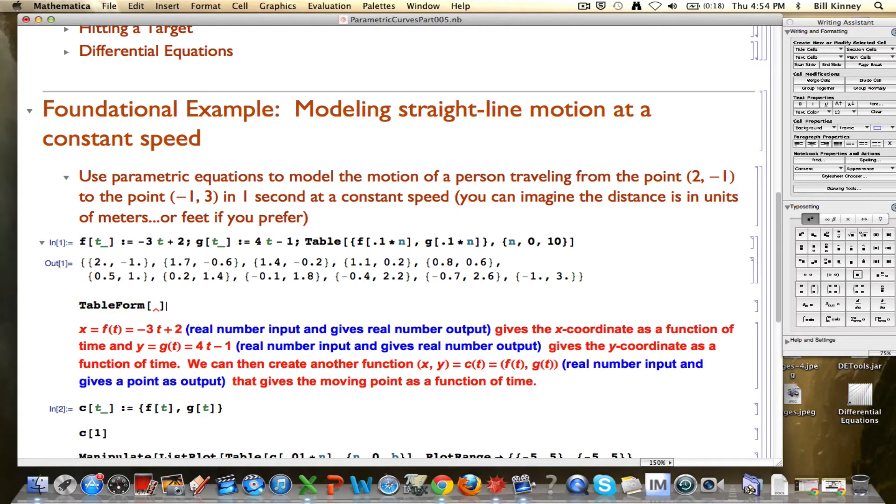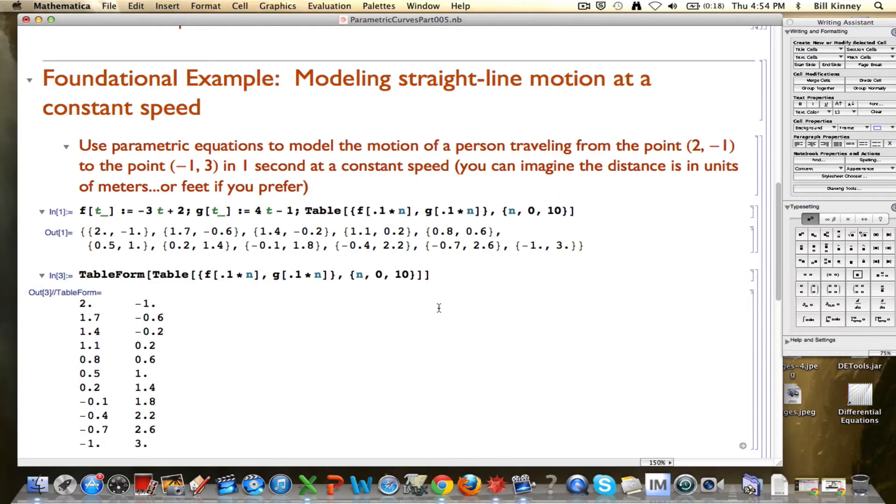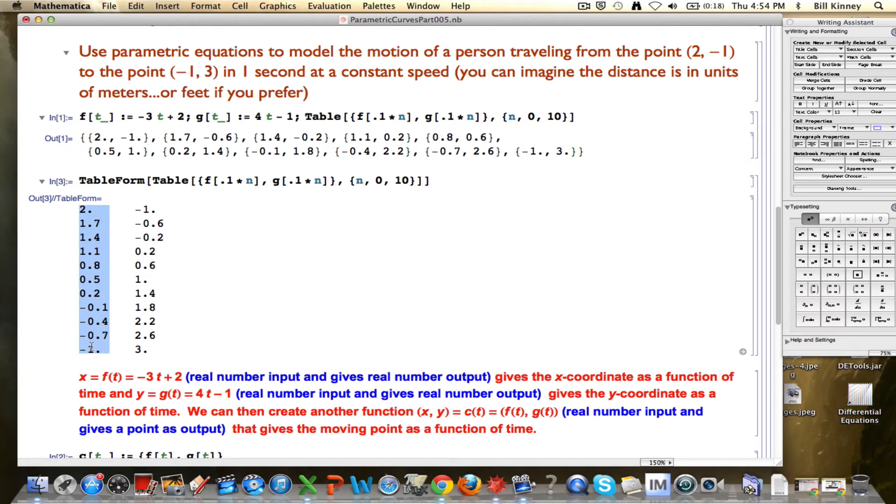Table form is a displaying function in Mathematica. What's going to be the input of this displaying function? The input is going to be this table command. I'm embedding it inside the table form. What that's going to do is Mathematica is going to work from inside out. It's going to use the table command to create this list and then the table form command is going to take that list and make it look like a table, like you would draw it by hand here. This first column is representing the x-coordinate, the first coordinate of the outputs. The second column is representing the y-coordinate, the second coordinates of the outputs.